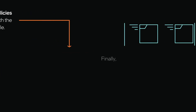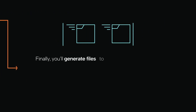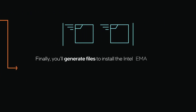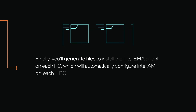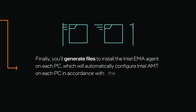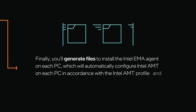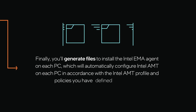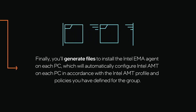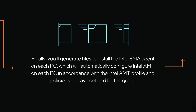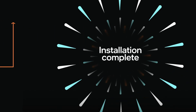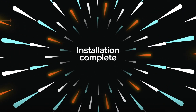Finally, you'll generate files to install the Intel EMA agent on each PC, which will automatically configure Intel AMT on each PC in accordance with the Intel AMT profile and policies you have defined for the group. This completes our video. Thank you for watching.